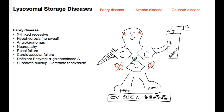We've got renal failure and cardiovascular failure as well. For those, I have the same X-linked recessive X crossing out the heart, and X's on top of the kidney, to represent failure of those organs. Now looking at the deficient enzyme and substrate buildup — in First Aid you can see that for each storage disease you need to know what deficiency you have and the outcome of that deficiency.